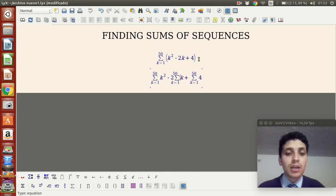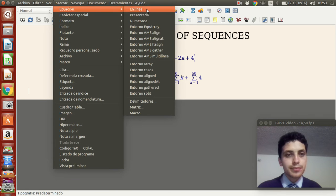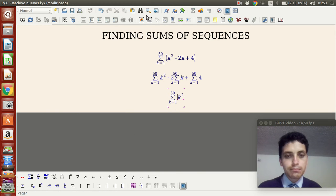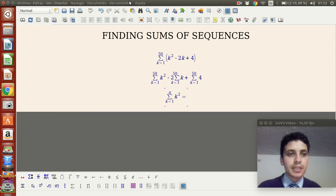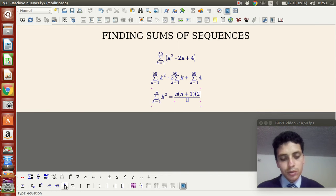After we have this, we can apply equations that tell us what each sum is. For example, the sum of k squared: if instead of 50 we have n, this sum is the same as the fraction n times (n+1) times (2n+1) divided by 6.